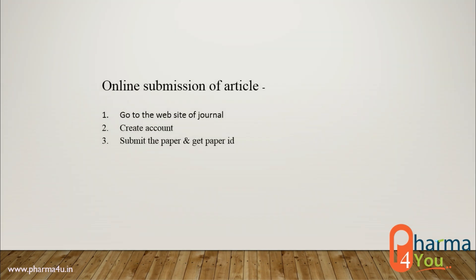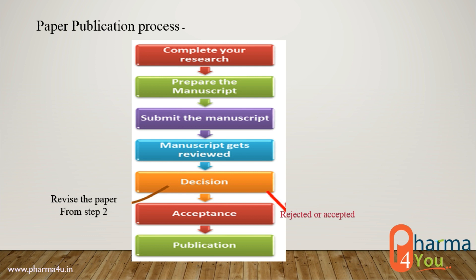How to submit your article to a journal. Go to the website of the journal, create an account, and then sign in to your account on the website. Then submit your paper to the website and get the paper ID. When your article is submitted successfully, you will receive an email. After you submit the article, it is reviewed and checked for plagiarism. A decision is then taken — if the article has low plagiarism and no mistakes it is accepted; if the requirements of the journal are not fulfilled, it is rejected. Once your article is accepted, the Journal Editorial Board decides the issue in which to publish your article.